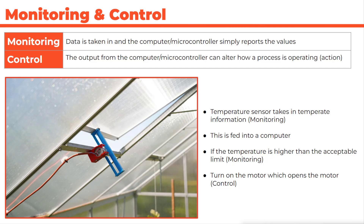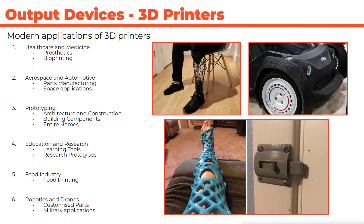3D printers are a fascinating output device used across many fields. In healthcare and medicine they are used for building prosthetics or bioprinting. In aerospace and automotive engineering they are used to build parts. The International Space Station even has a 3D printer to print parts in space. Other uses include architectural prototyping, building homes from concrete or plastic, education and research, printing food using edible inks, robotics and drones with custom parts, and military applications.